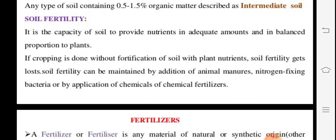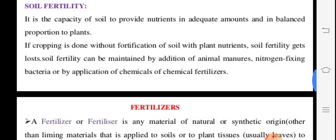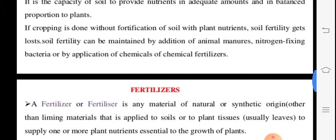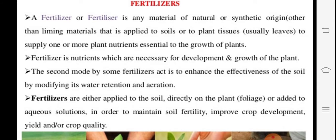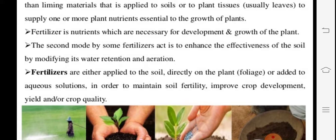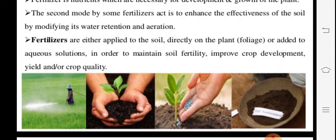Soil fertility is based on the amount and balance of all nutrients. Manures, nitrogen-fixing bacteria, and different chemical fertilizers contribute to fertility. Synthetic fertilizers include NPK, which act as good nutrients for plant development and growth. They also help in modifying water retention and aeration. Fertilizers directly affect the plant, improving crop development, production, and crop quality.